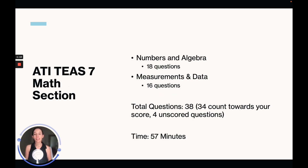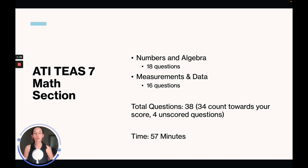On the ATI TEAS 7 math section of the exam you're going to get 18 questions on numbers and algebra and 16 questions on measurements and data. Your total questions on the ATI TEAS 7 math section is going to be 38 questions, but only 34 are going to count towards your score — there will be 4 unscored questions, which are usually questions they're testing out for future exams. You will have 57 minutes to complete these 38 questions.